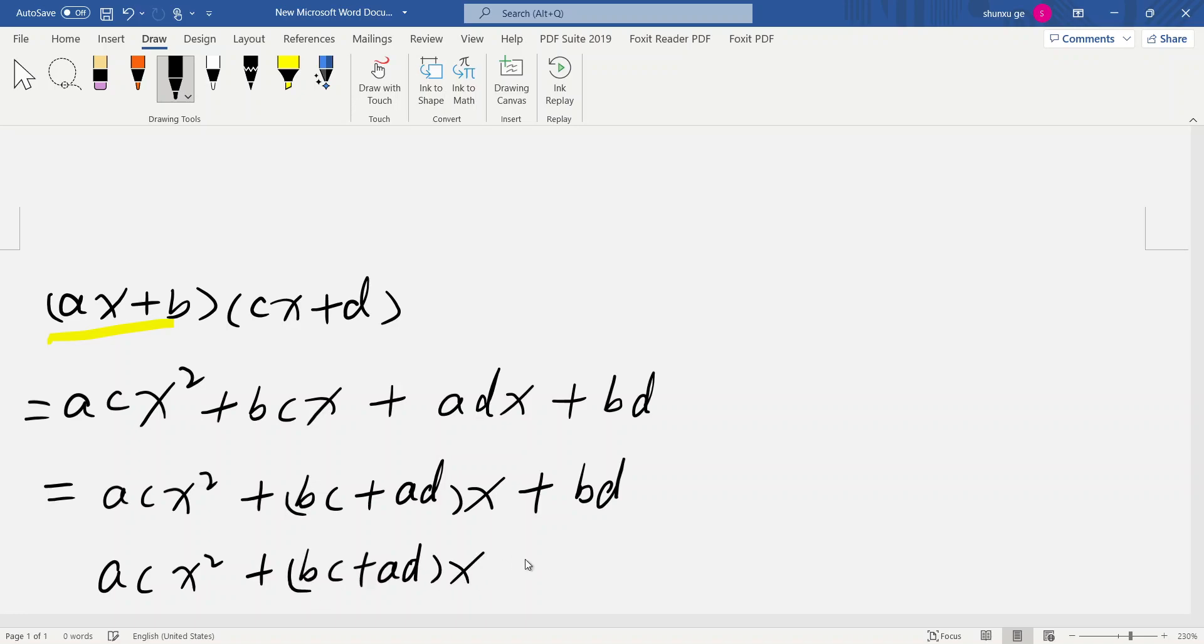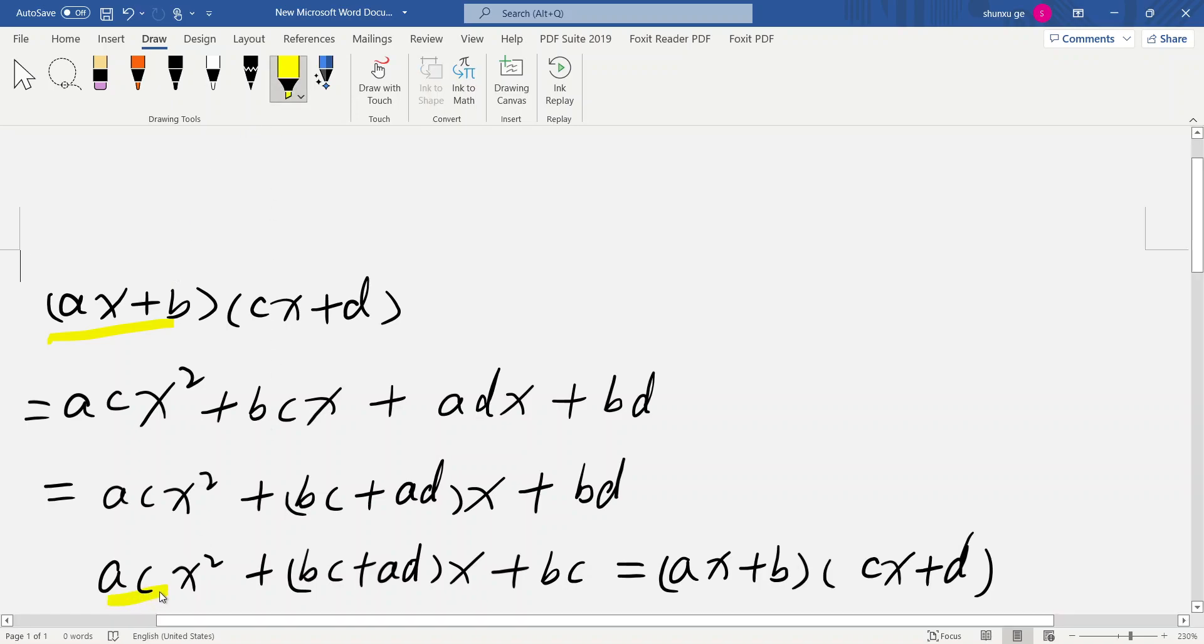Plus x, plus ad equals (ax + b) times (cx + d). Okay, this is equal. Why we write this? Because sometimes we can find one polynomial like this and we want to factorize them.